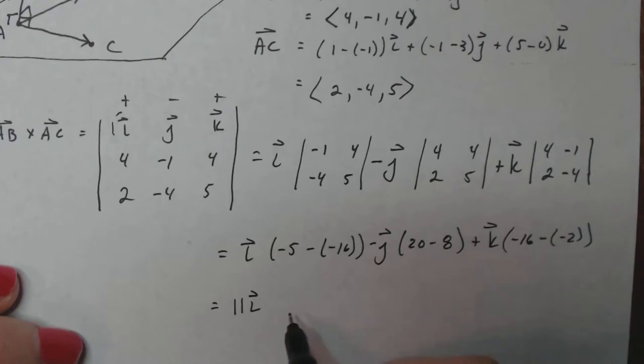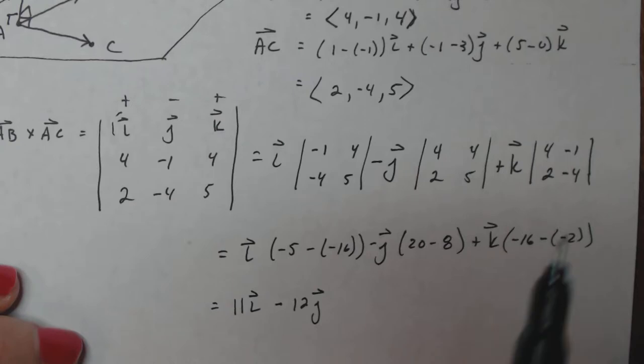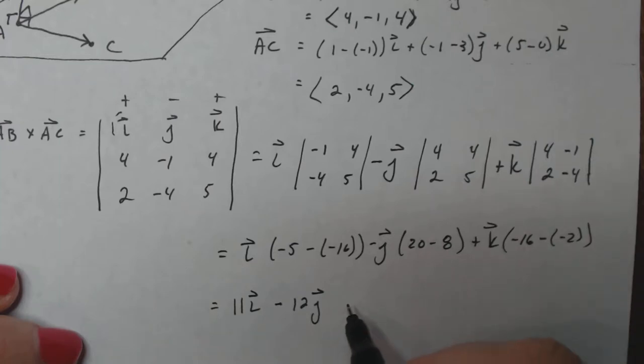Minus j. Same thing. 4 times 5 minus 2 times 4. And you have 20 minus 8. So that's minus 12j. And then here I have negative 16 plus 2. So that should be negative 16 minus minus 2.